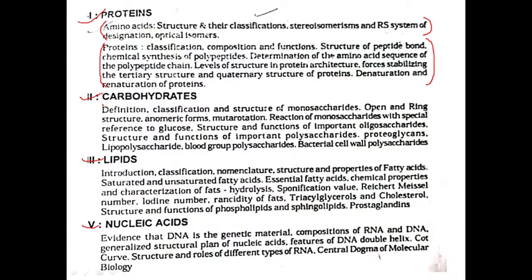In the second part we will discuss carbohydrates, from monosaccharides to polysaccharides. In the third unit we will discuss lipids and fatty acids. In the fourth unit we will talk about nucleic acids — DNA and RNA — their structures, the different types of RNA, and the central dogma of molecular biology. This covers the theory part of the syllabus.